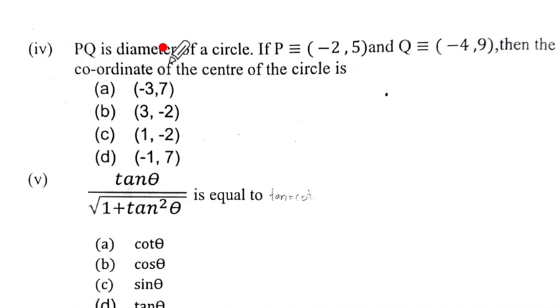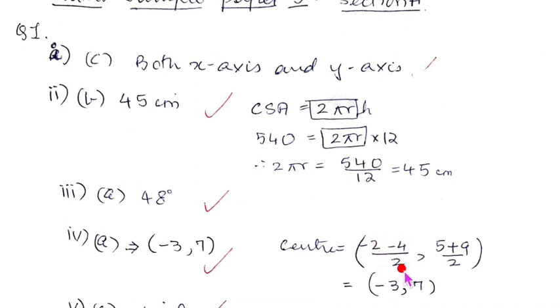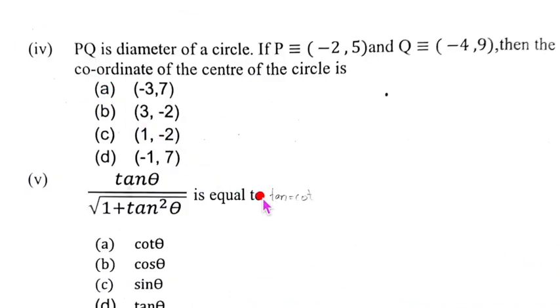Question number 4. PQ is the diameter of a circle. P is given as this, Q is given as this. Then the coordinates of the center of the circle is. So it will be your x1 plus x2 upon 2 and y1 plus y2 upon 2. That is the midpoint formula. The center becomes the midpoint of PQ, right? So this will be -6 upon 3 that is -3 and this will be 14 upon 2 that is 7. So we will have option A which is -3 comma 7.